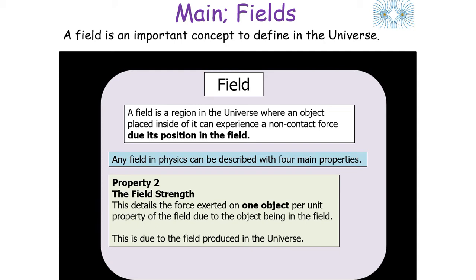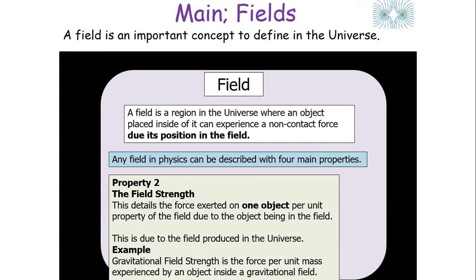In today's lesson, we're going to focus on one of these particular properties: the field strength, which details the force exerted on one object per unit property of the field due to that object being in the field. This property is due to the field itself produced in the universe. For example, the gravitational field strength is the force per unit mass experienced by an object inside a gravitational field.